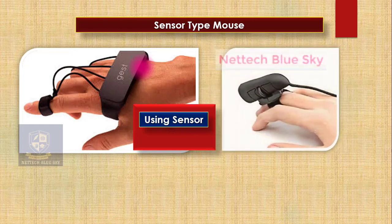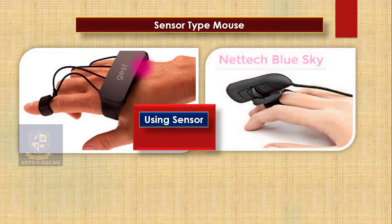This sensor type mouse is available in the market. Sensor type mouse is a very new generation type system — created in 2018. This is a 2018 generation type mouse, and the sensor mouse works using your positions.